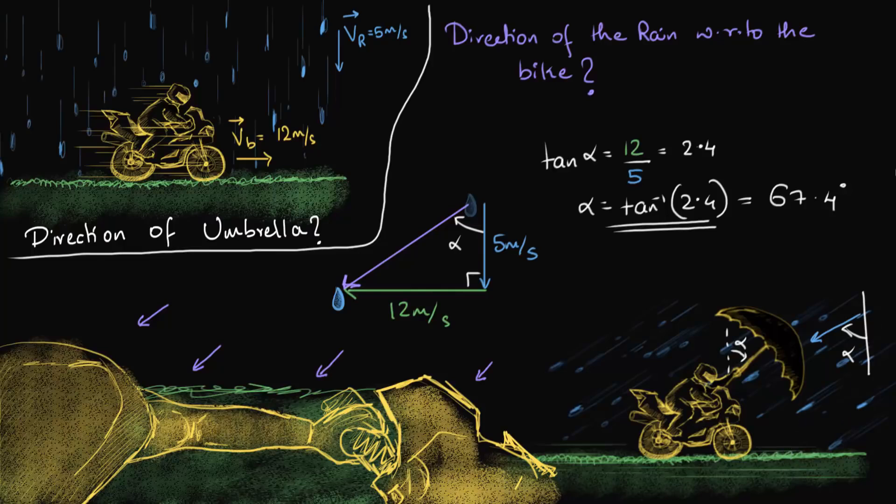Now, one small note. We could have arrived at this result directly by using the general expression that we derived in a previous video. And that was the relative velocity of the rain with respect to the bike. That is equal to the velocity of the rain, as seen from the ground, minus the velocity of the bike, as seen from the ground. And if we had used this expression, we would get the same result. Let's see.